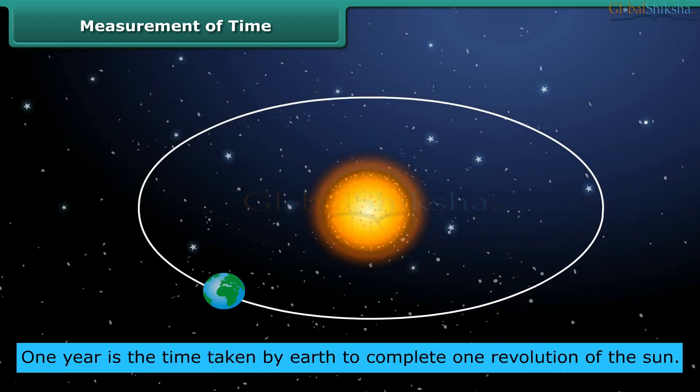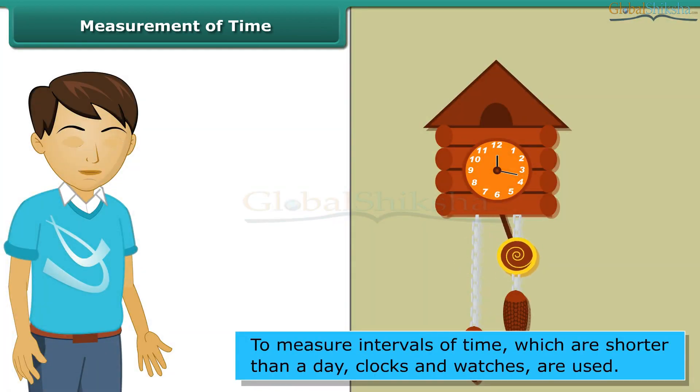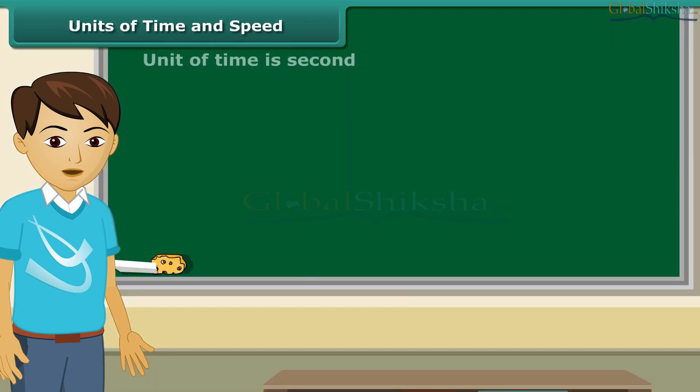One year is the time taken by earth to complete one revolution of the sun. To measure intervals of time which are shorter than a day, we use clocks and watches. The basic unit of time is second. Its symbol is S. Larger units of time are minutes and hours.